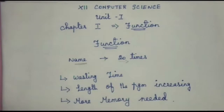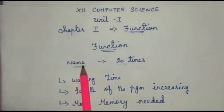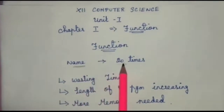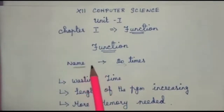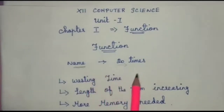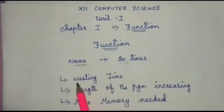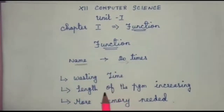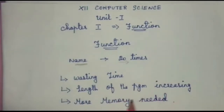We will see one example. If you want to print your name 20 times, you have to write your name again and again up to 20 times. That means you are wasting your time. The length of the program will be increasing and you need more memory space.